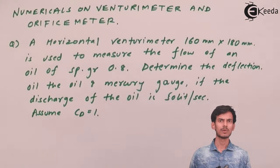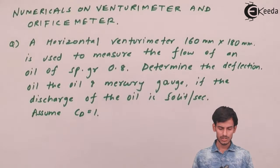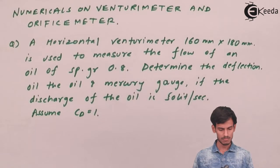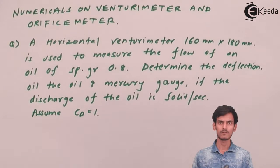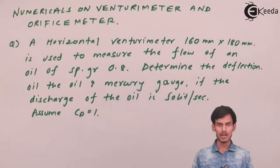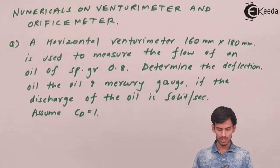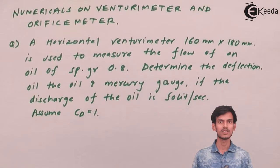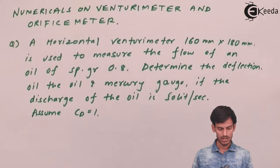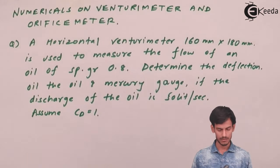So I will read out the question once again. A horizontal Venturimeter which is 160 mm by 80 mm is used to measure the flow of an oil of specific gravity 0.8. Determine the deflection of the oil and mercury gauge if the discharge in the oil is 50 liters per second. We have to assume the coefficient of discharge is 1. So this is the question. Let's now solve it.